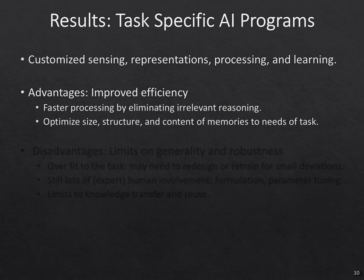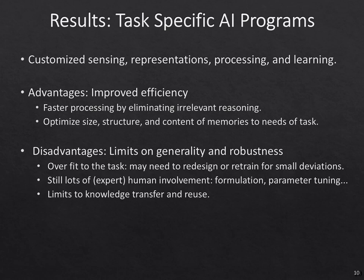Similarly, when a Go program is learning to play Go, that's all it's doing, making it very efficient for that task. It also allows us to optimize the size of the computer and knowledge for the task. The disadvantage is that gives us real limits on generality and robustness. We build systems that really fit the task, and we might need to redesign or retrain them for small deviations. If we take a system that can play StarCraft and change the rules a little bit, we would likely have to retrain it from scratch.